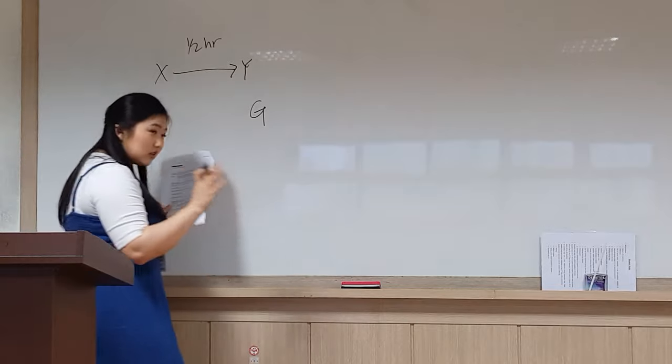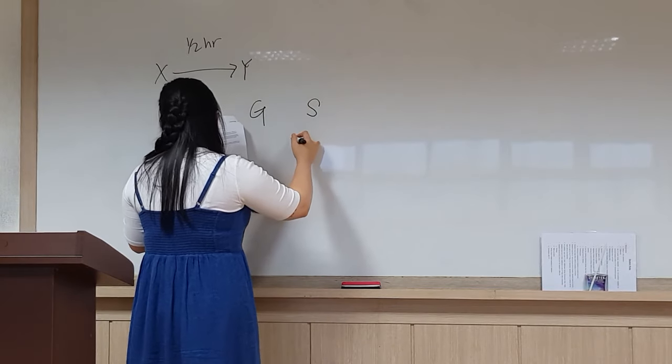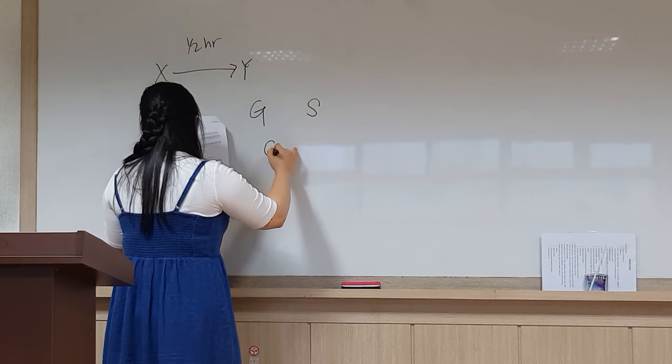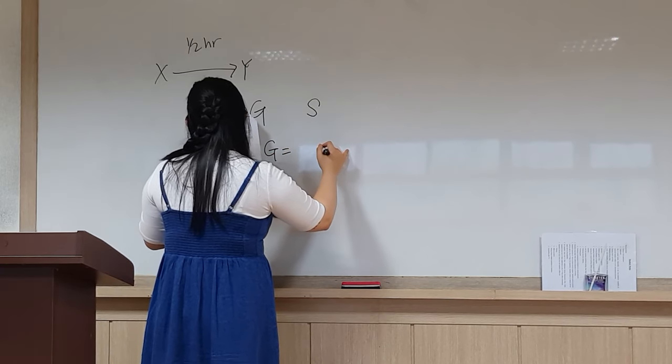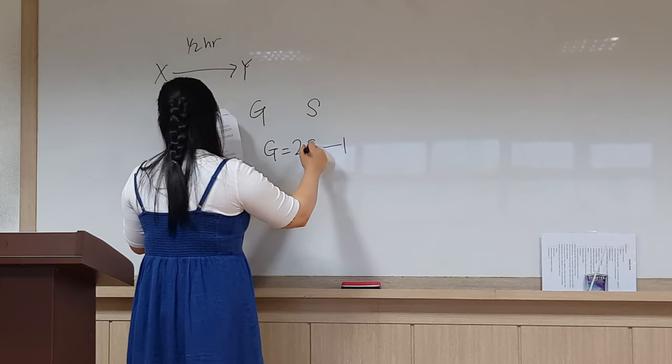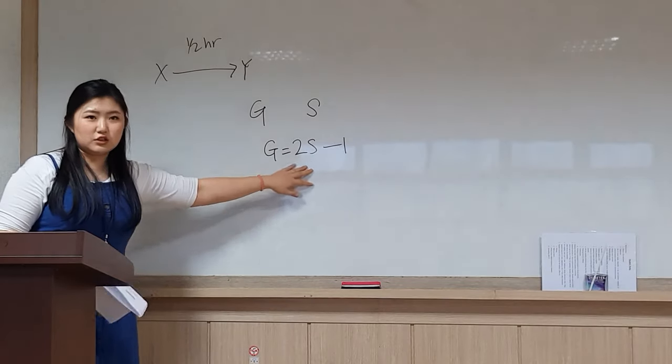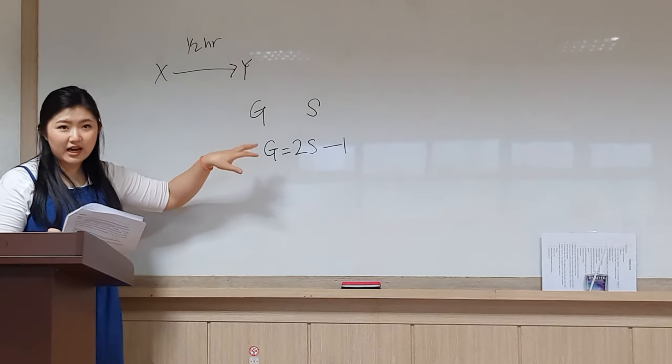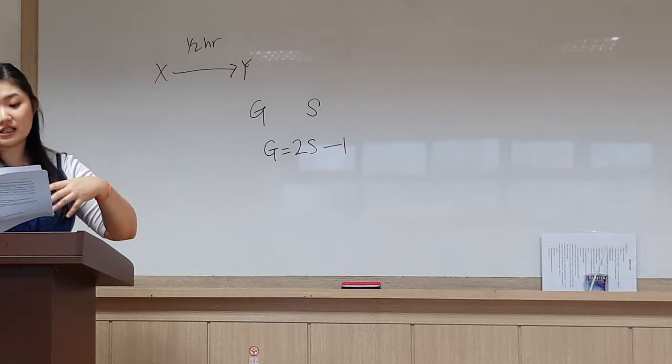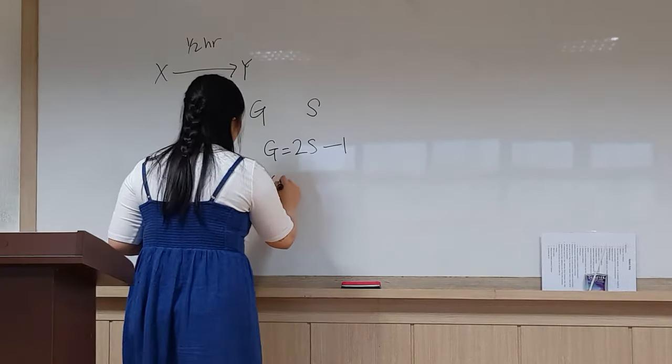I will stop there and really think through what that means. G for Garrett, S for Scott. Garrett jogs one mile per hour slower, so it's less than two times Scott's rate. That's what I would really go through. I would take my time with that to write the right equation.